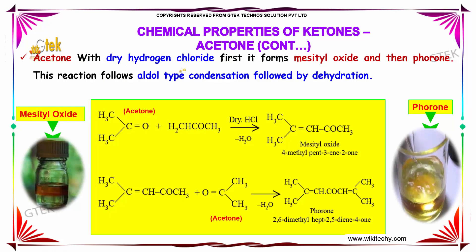Acetone with dilute hydrochloric acid first forms mesityl oxide and then phorone. This reaction follows aldol-type condensation followed by dehydration. Acetone reacts in the presence of dilute hydrochloric acid, and the water molecule is removed from these compounds, forming 4-methylpent-3-en-2-one. A similar reaction leads to the formation of phorone.